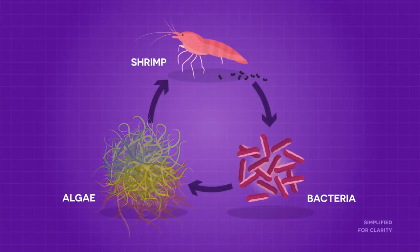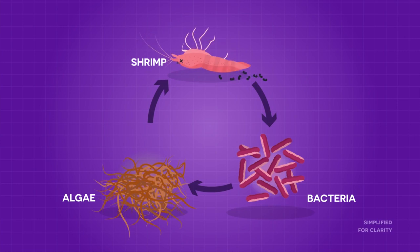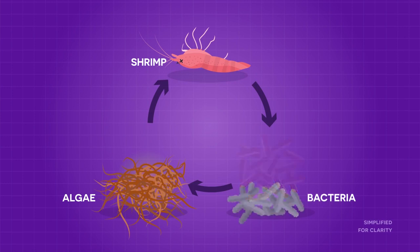For instance, if there was no light, the algae wouldn't grow. That means the shrimp would die since they wouldn't have any algae to eat. And if the shrimp stopped pooping, the bacteria die too. So everything in an ecosystem interacts and depends on each other for survival.